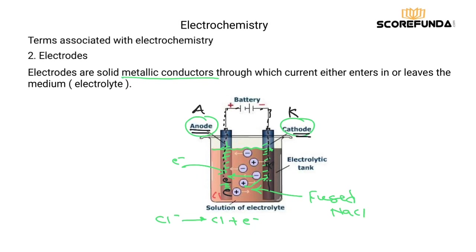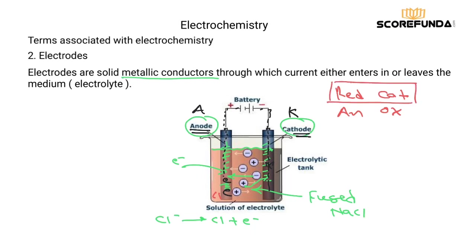We generally understand that anode may be positively or negatively charged, and cathode may be positively or negatively charged. To remember which is which, we use the terminology 'red cat' and 'ox': reduction at the cathode (red cat), and oxidation at the anode (ox). The electrode where reduction occurs is your cathode, and the electrode where oxidation occurs is your anode.